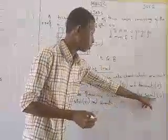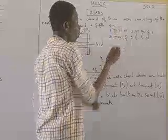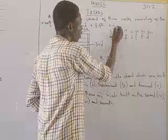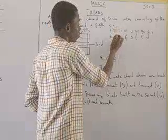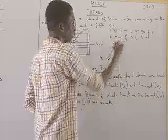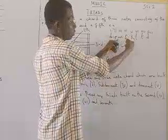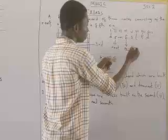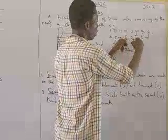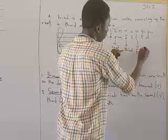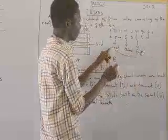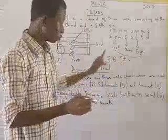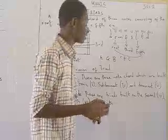Now, built on the second degree, the technical name for the second note is supertonic. You bring the supertonic as your root position, then count one, two, three — that is the third, which falls on fa. Then count one, two, three, four, five — that is your fifth. So the supertonic triad on the second degree gives you three notes: re-fa-la. You do the same thing for the third, sixth, and seventh degrees.